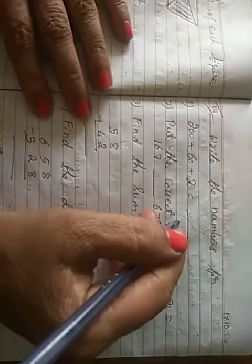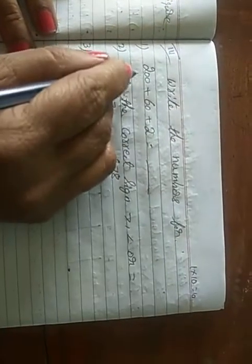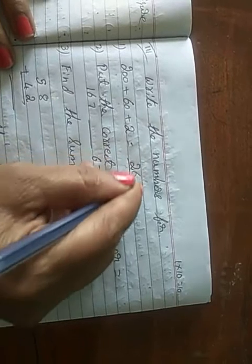Write the number names for 200 plus 60 plus 2. 262.